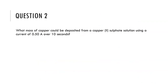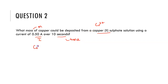For question two, have a go at this yourself. We're looking for the mass of copper deposited from a copper(II) sulfate solution using a current of 5 amps over 10 seconds. Remember, first write the reduction equation to get the mole ratio of electrons to metal, then use Q equals IT and then Faraday's equation. Pause the video, have a go, then come back to see the solution.